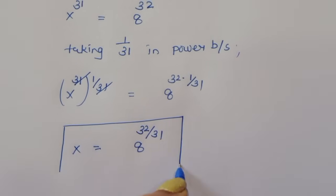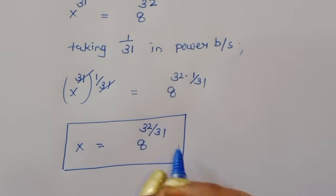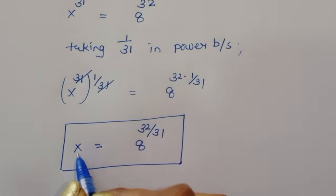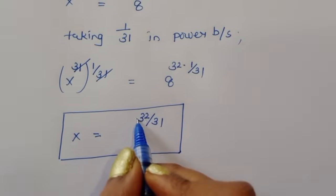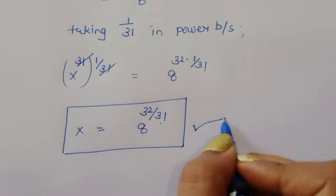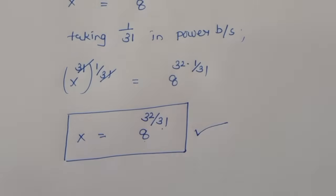We got the same value in the first method and in the second method: x is equal to 8 power 32 divided by 31. So this is the correct solution. Thank you.